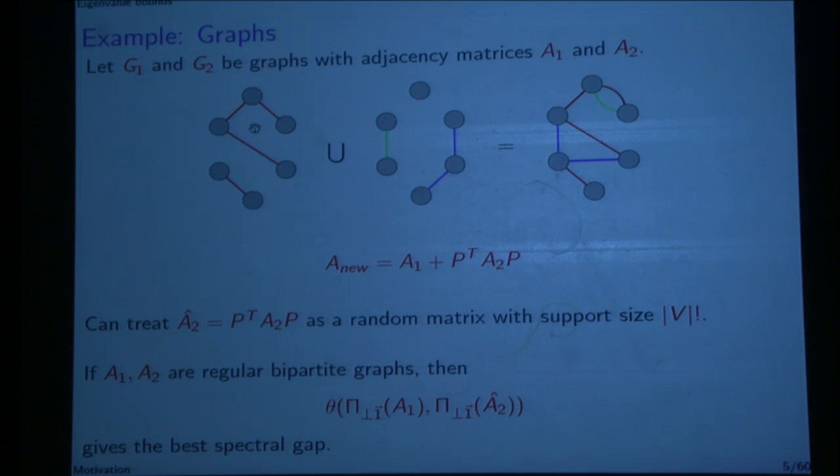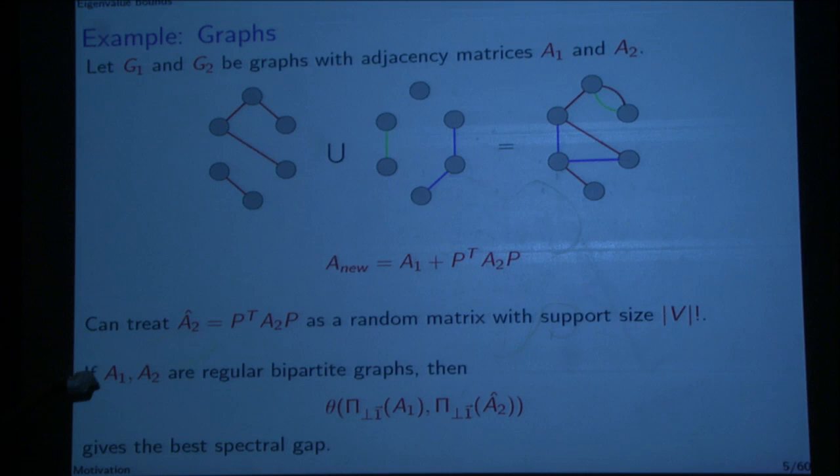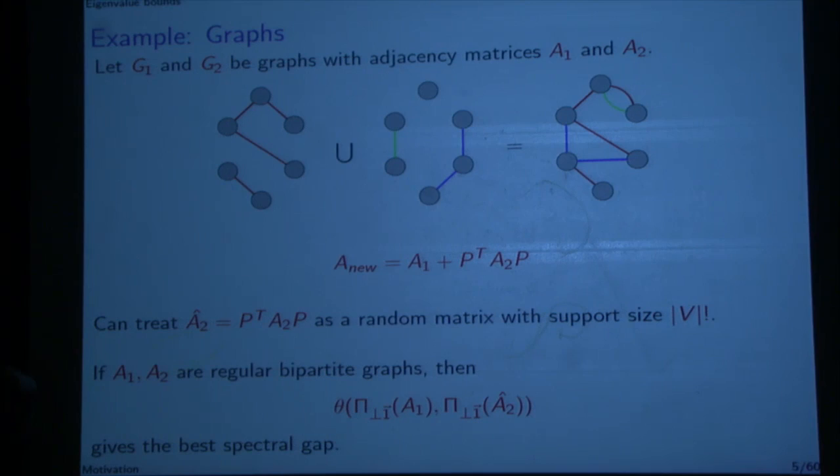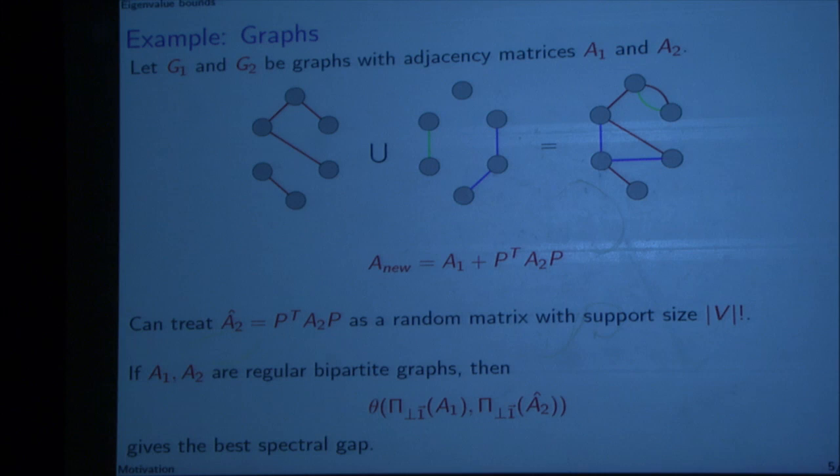So if you look at all possible ways that you can permute this matrix, you can consider it to be a random matrix. It turns out if A1 and A2 are regular bipartite graphs, then if you project A1 and your random A2 orthogonal to the all-ones vector, then what's left — if you minimize that — you get a very good spectral gap, which is typically what you want to do in spectral graph theory.